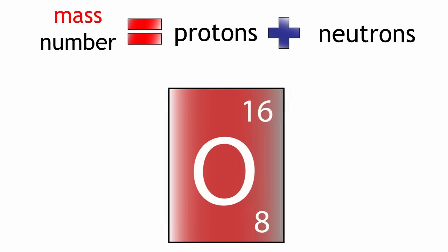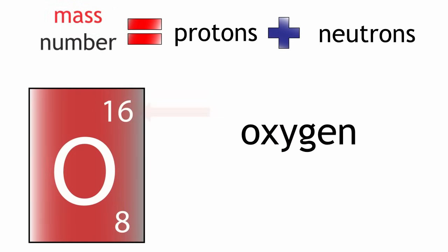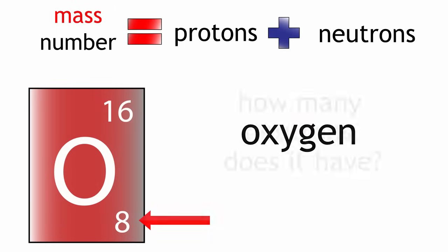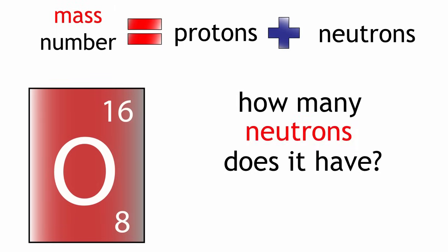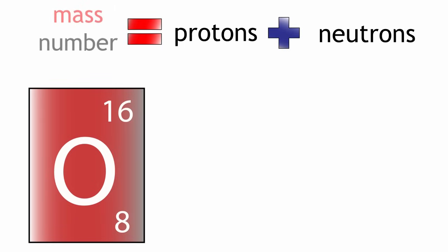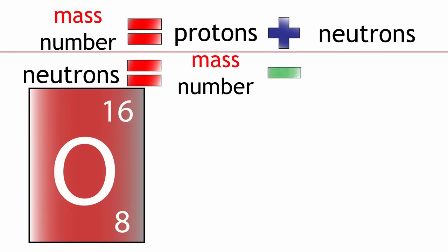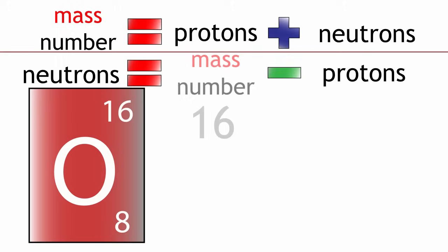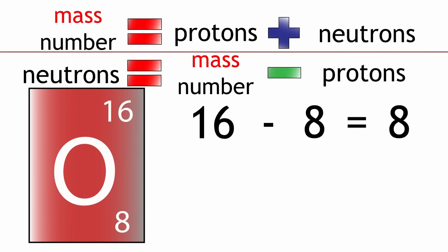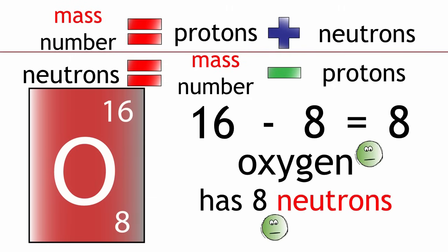So if we take oxygen — oxygen has a mass number of 16 and has 8 protons. But how many neutrons does it have? Remember, mass number equals protons plus neutrons. We can rearrange this to show that neutrons equals mass number minus protons. Neutrons equals 16 minus 8 equals 8. Oxygen therefore has 8 neutrons.